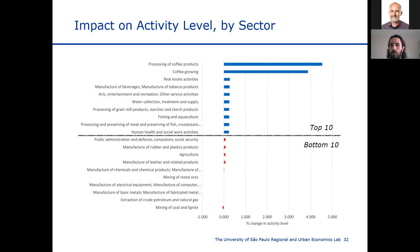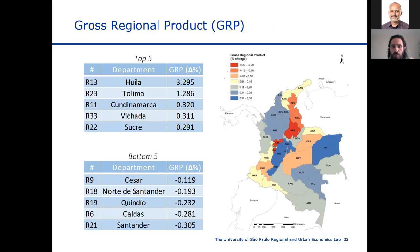Looking at impacts on activity level by industry, processing of coffee products and coffee growing are the most affected, followed by real estate, manufacture of beverages and tobacco products, arts, entertainment and recreation, water collection, and processing of grain meal products. Even amongst the bottom 10 affected industries, most are still affected positively. For changes in gross regional product, we see the same topology pattern: Huila, Tolima, the Central District, and Cundinamarca are the most benefited, while Santander, Cauca, Risaralda, and Quindío are the regions negatively affected.